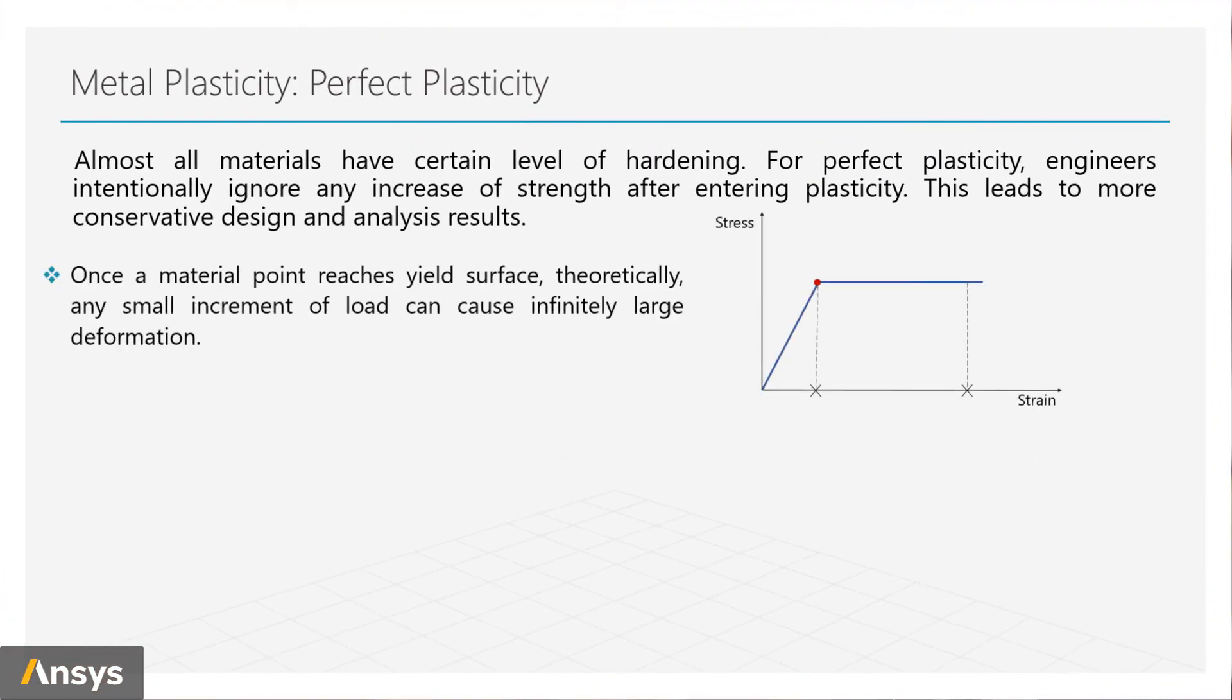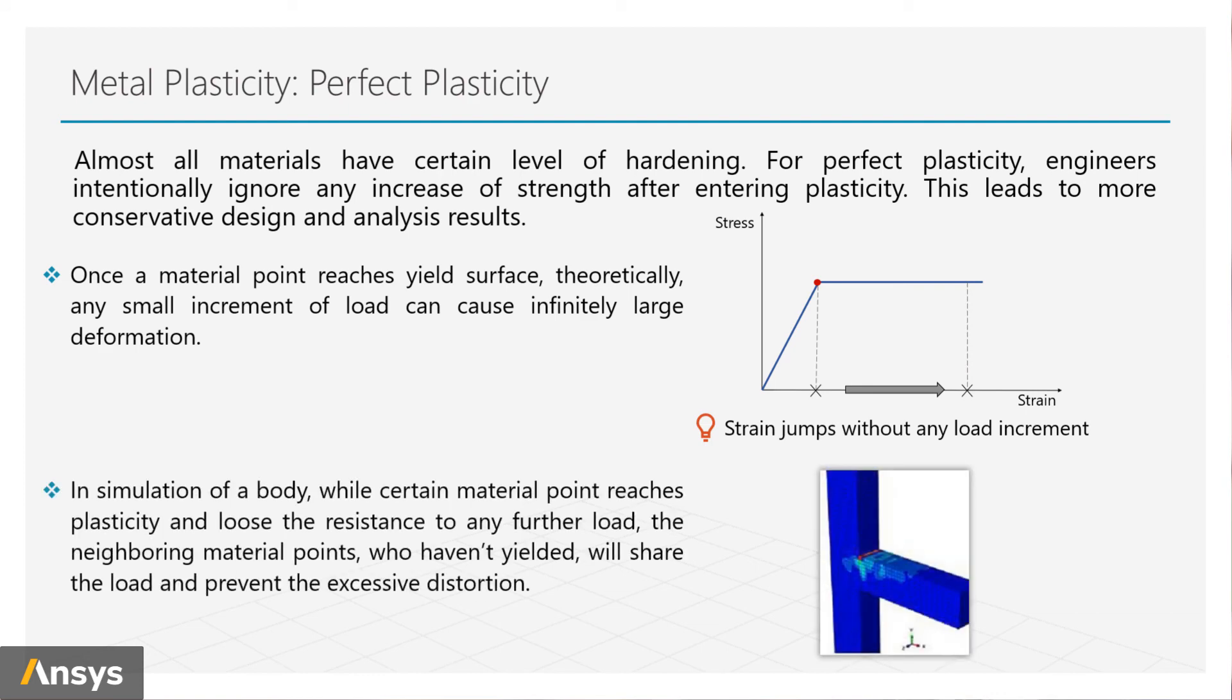Stress-strain curve becomes a flat line, a linear function with zero tangent. We call this perfect plasticity. For perfect plasticity, with any increment of load we're expecting an infinitely large deformation because the tangent is zero. With perfect plasticity, while certain material points reach yielding and lose the resistance to any further load, the neighboring material points who haven't yielded will share the load and prevent the excessive dispersion.